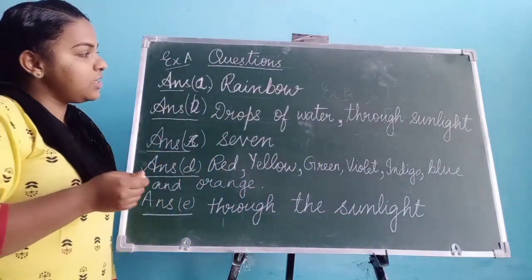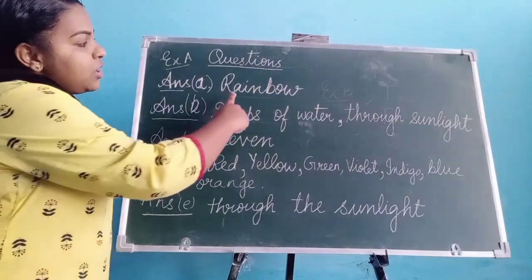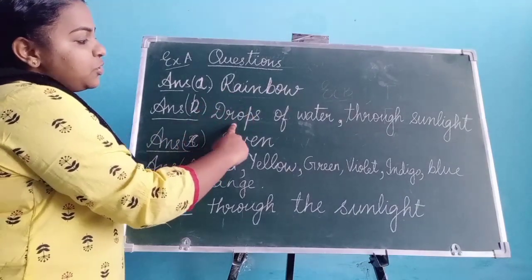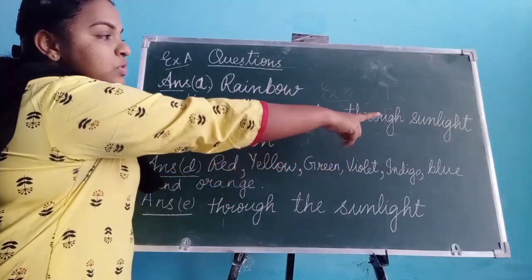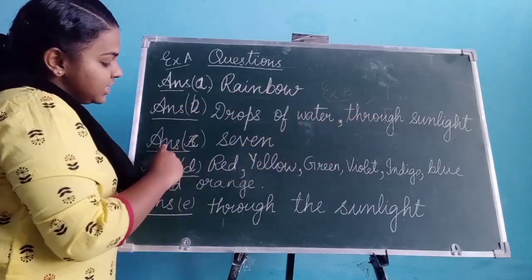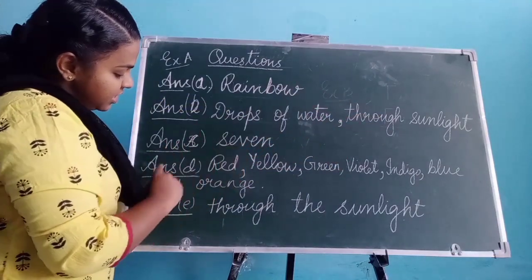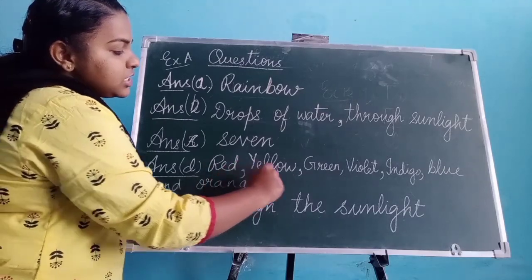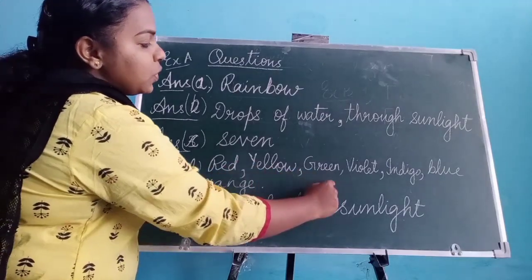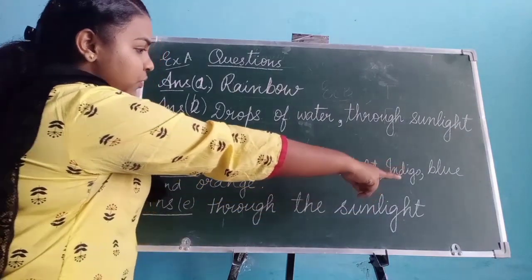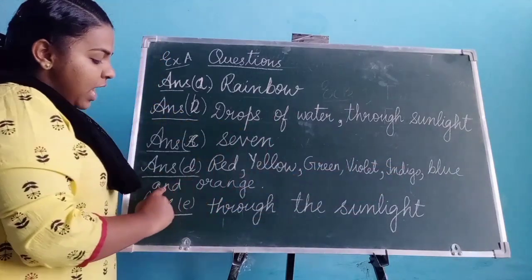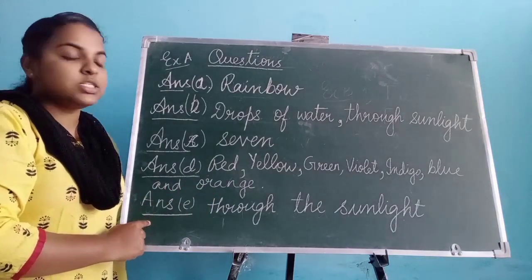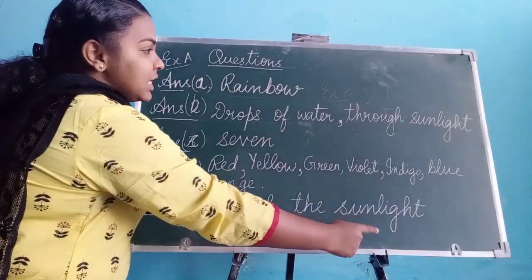So the answers are: A — rainbow; B — drops of water through sunlight; C — 7; D — red, yellow, green, violet, indigo, blue, and orange; and E — through the sunlight.